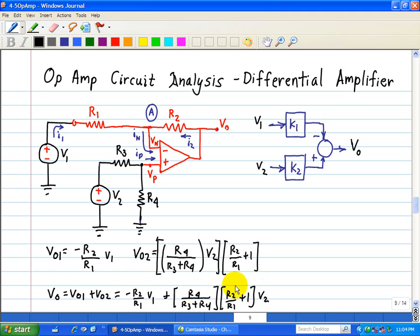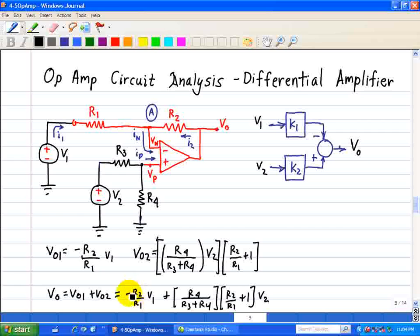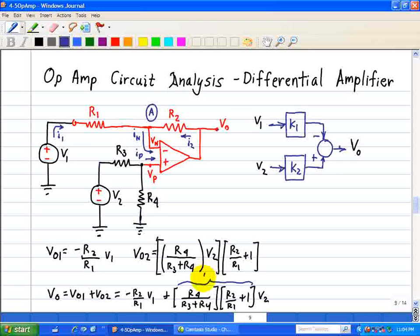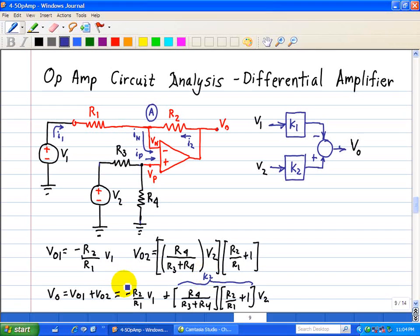We can put this in block diagram form where K1 is the ratio of negative R2 over R1. And the constant K2 here, the scalar factor, is the result of these resistor products shown here. That is, all this expression here is equal to K2. And then this here is equal to K1.